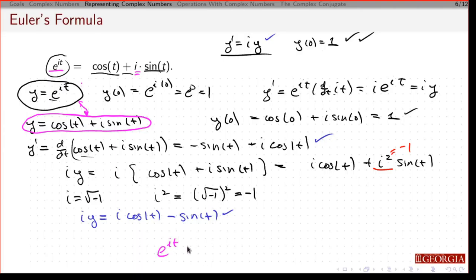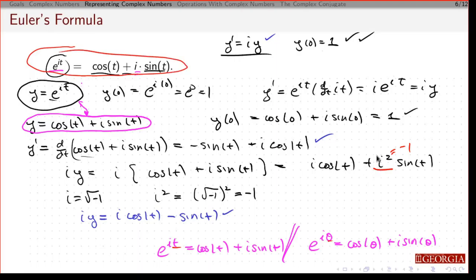So that gives us Euler's formula, which says e to the i t is cosine t plus i sine of t. And you may see other people write this as e to the i theta is cosine theta plus i sine theta. It's exactly the same thing. The only difference here is that instead of saying theta, I'm calling it t. So there's no difference there. That gives us Euler's formula, which is a huge result.